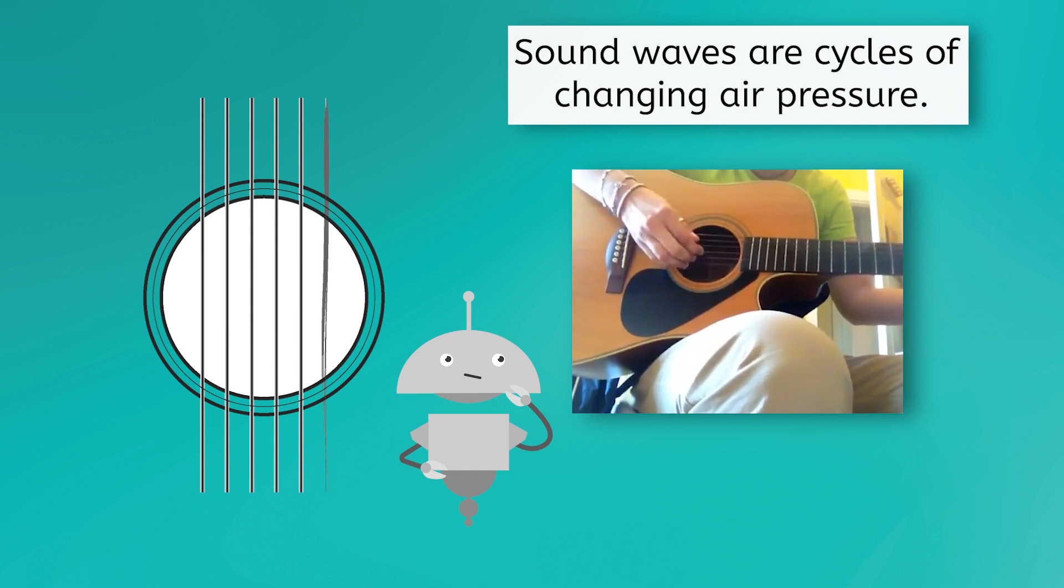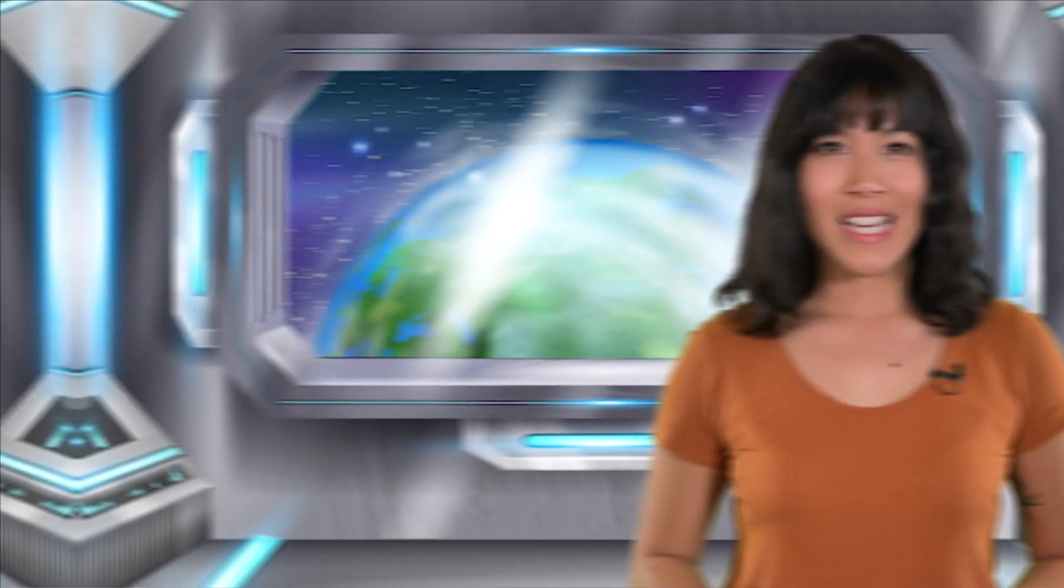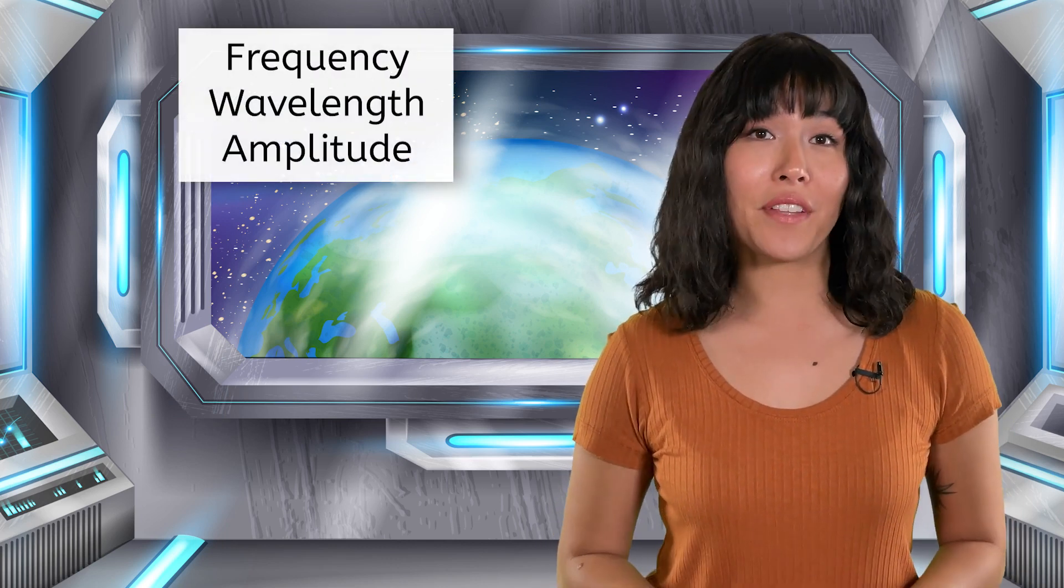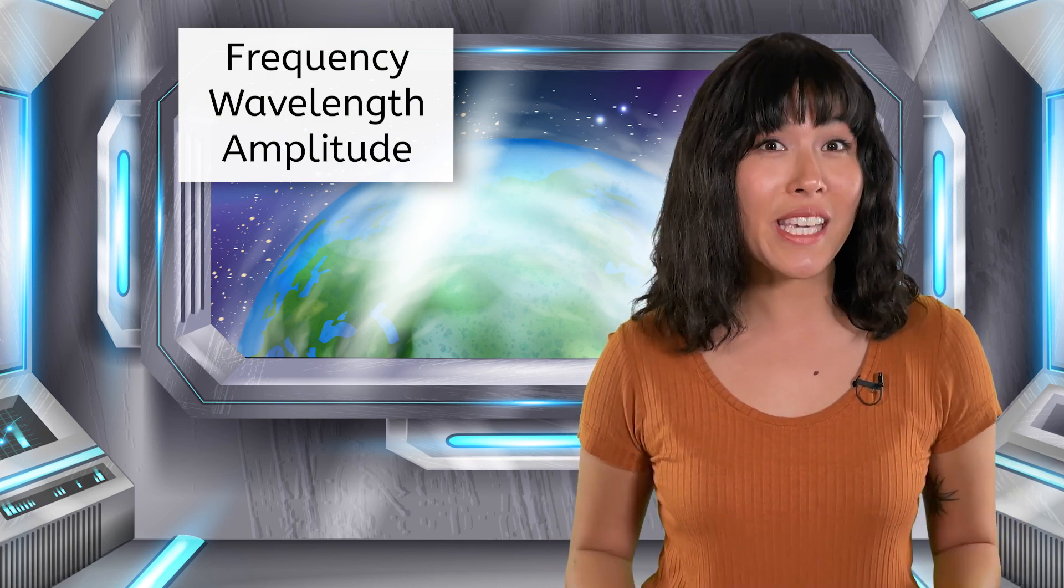But our ears interpret these pressure variations as music. What do you think determines the pitch and volume of the sounds we hear? In the PDF activities for the previous lesson, you learned about characteristics of waves, such as frequency, wavelength, and amplitude. These properties determine what type of sound you hear.